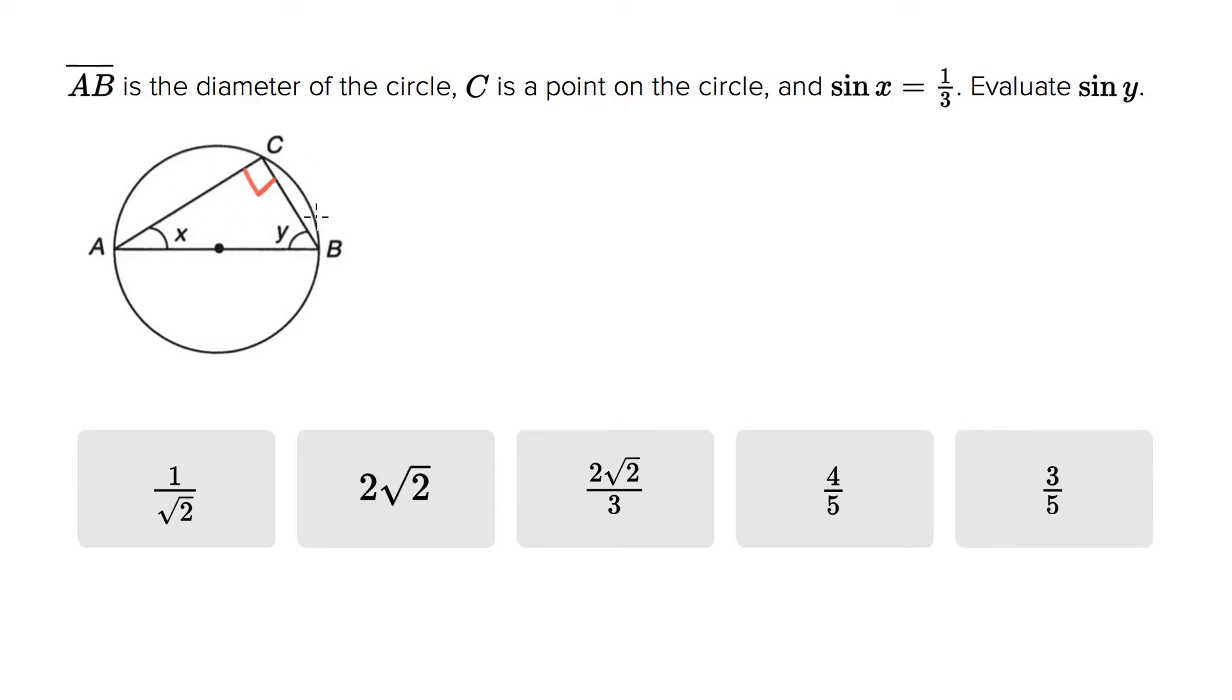that if you have a triangle inscribed in a circle where one side is the diameter, then the opposite angle is a right angle. So this whole construct is just to say we're dealing with a right triangle.